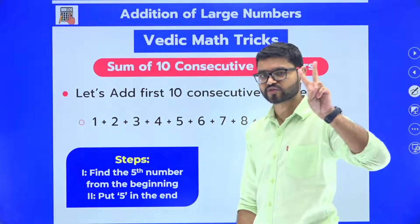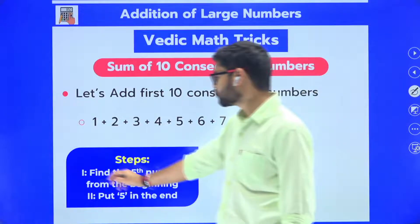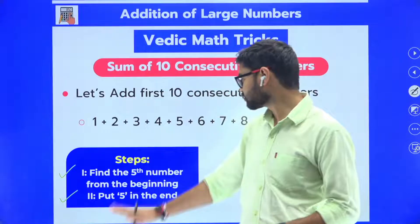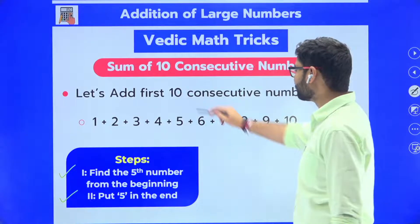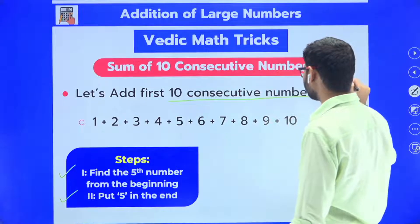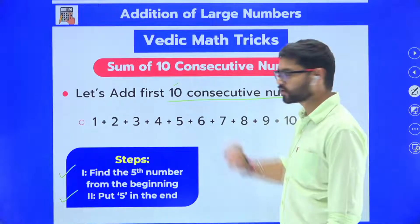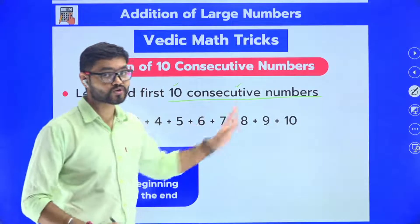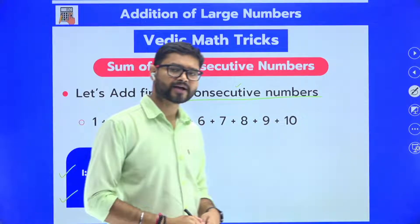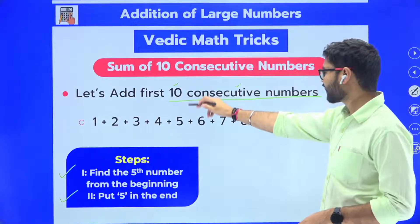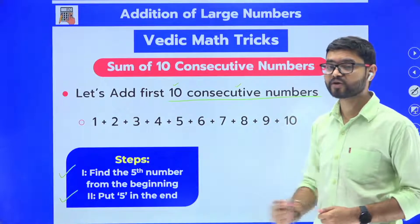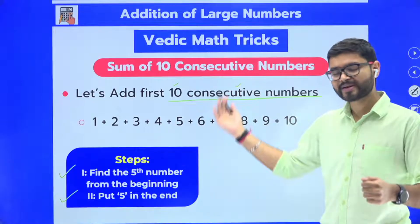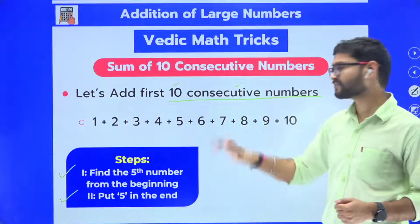Remember, I asked for only two seconds. In those two seconds we will be using just two steps to get the answer. Whenever we are going to add 10 consecutive numbers — and this is important — the number must be 10 only and they must be consecutive. Only then can we apply the trick; otherwise we cannot.